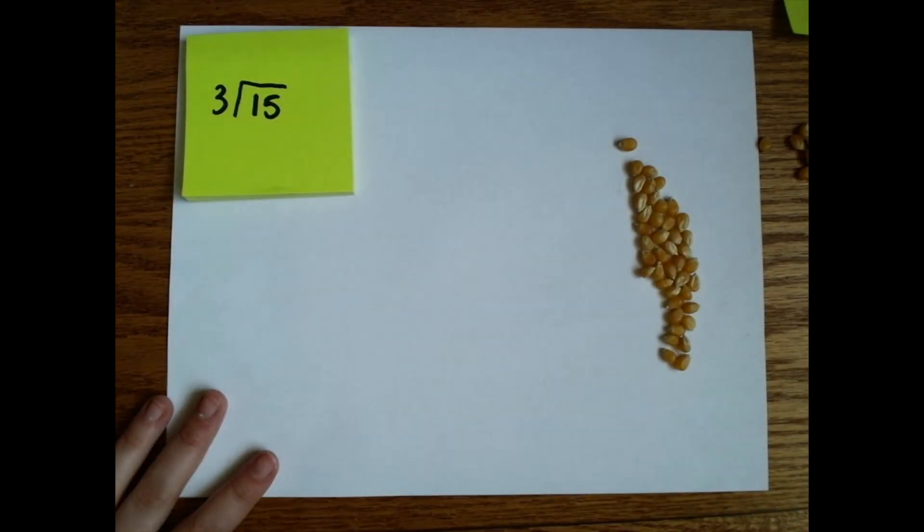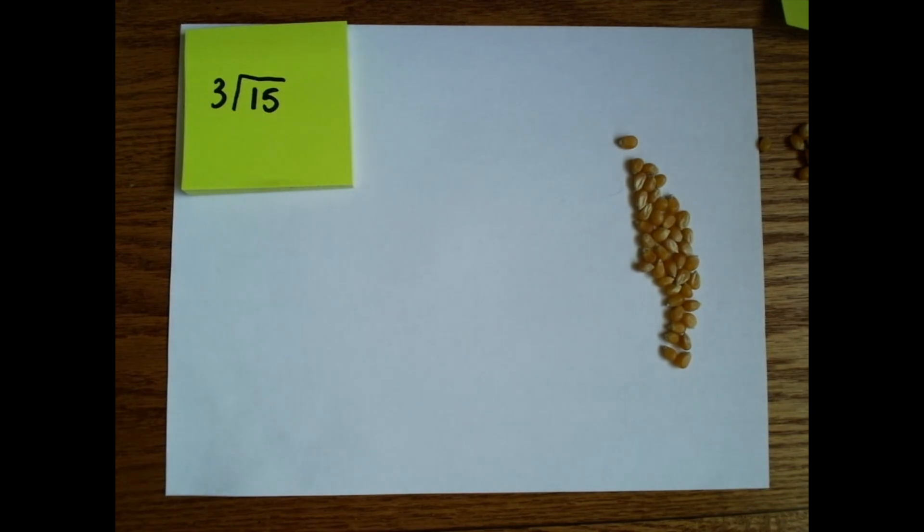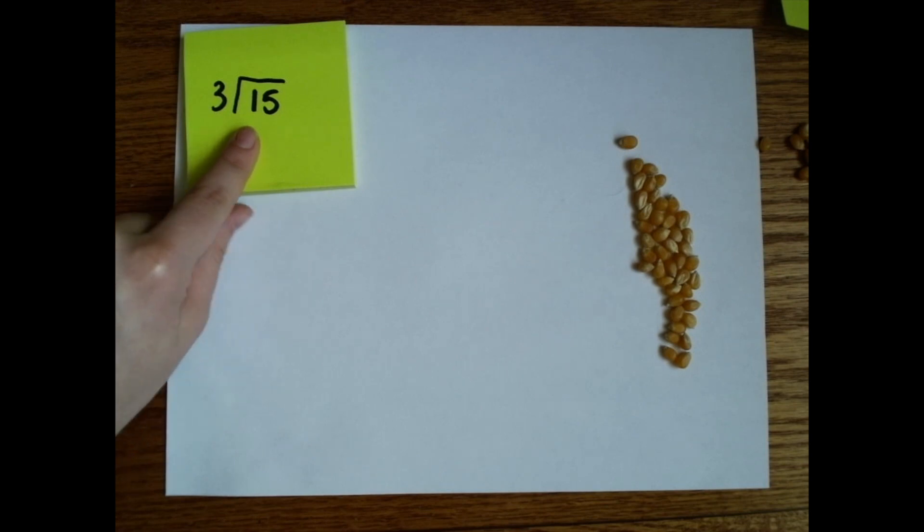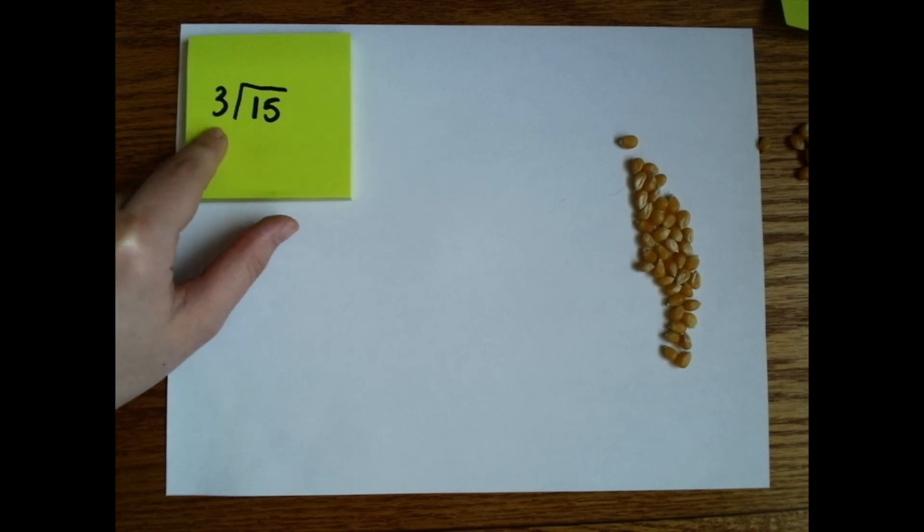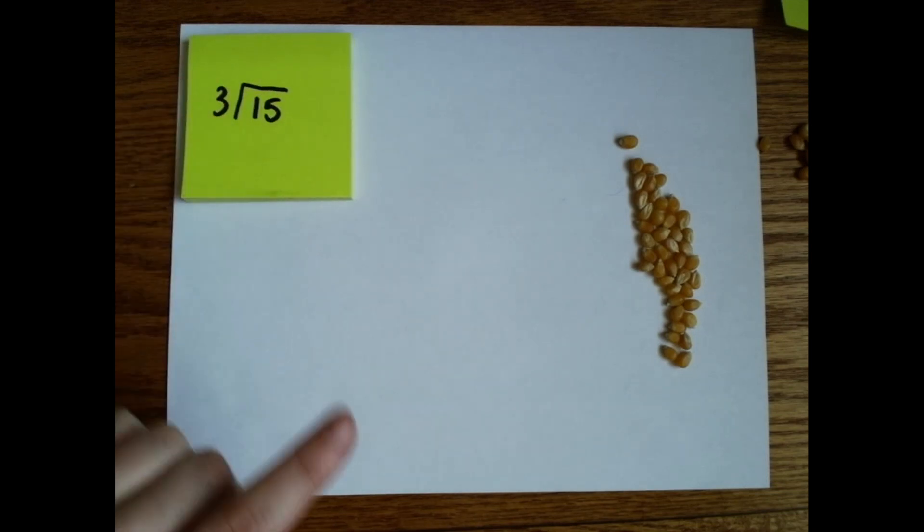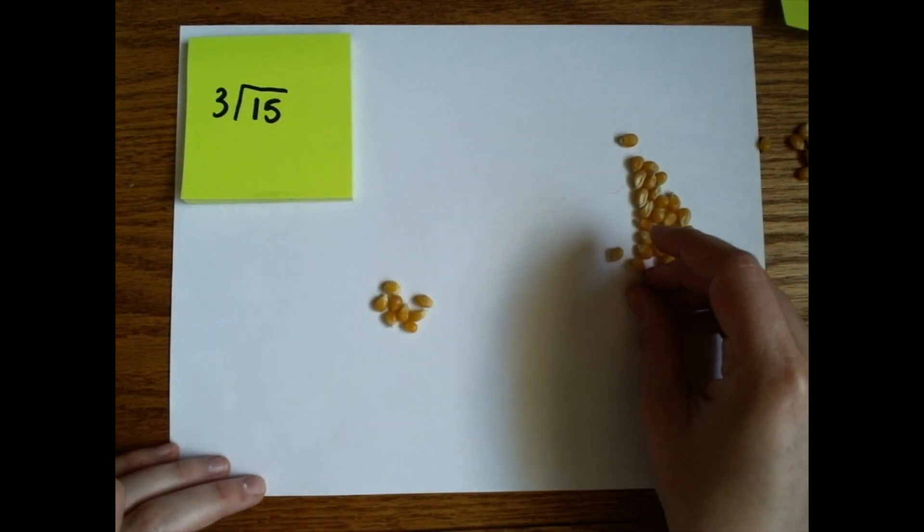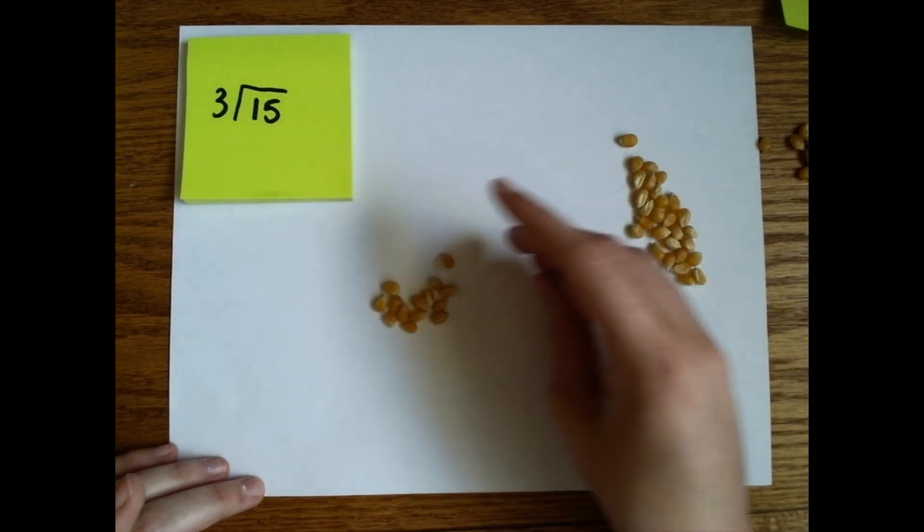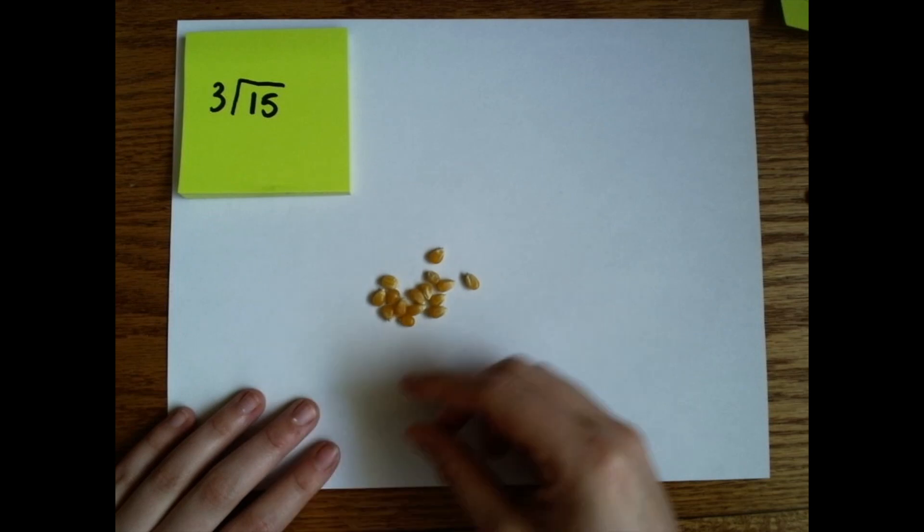Last one. Three divided by 15. I wonder if that's how I read that. Hmm. I don't think so. So from what I remember about the previous video, 15 is my dividend, and the one on the outside is my divisor. So it's actually 15 divided by three. So I'm going to take 15. There's eight. 15.